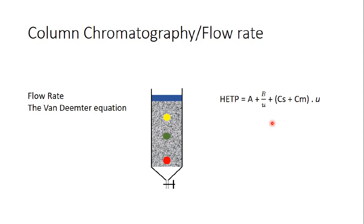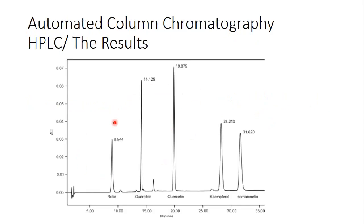At the end, because we have a detector, we get results similar to this graph. This is the time axis and this is the signal axis. This is the first substance, the second, the third coming out of the column. The height of the peak represents the amount or concentration of the substance in my mixture, but not only the height — also the width. In order to know exactly the concentration of a certain chemical, I should calculate the surface area of the peak.